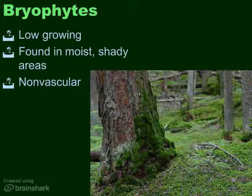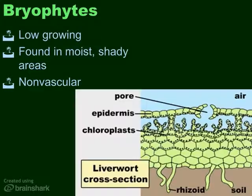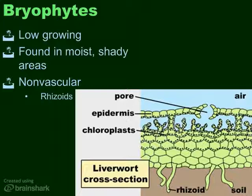Bryophyte plants are small, less than an inch high most of the time, and they take in water through specialized cells called rhizoids. Because they take up water and nutrients, rhizoids act like roots, but they're single cells — very long single cells. And because they do not have vascular tissue, water moves around the plant by osmosis. Remember, osmosis is the diffusion of water across the cell membrane. So water moves through the cells by osmosis, and nutrients move through the cell by diffusion.